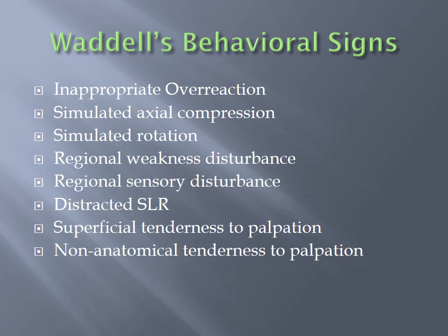A distracted straight leg raise (SLR): when you test a patient supine, if they know you're testing a specific nerve, they may only let you lift their leg a small amount. A way to distract the patient is to perform the test with the patient sitting on the edge of the bed or a chair and then extending their knee. If they can extend their knee fully, that's essentially almost a 90-degree straight leg raise, and they would be positive for displaying a distracted straight leg raise.